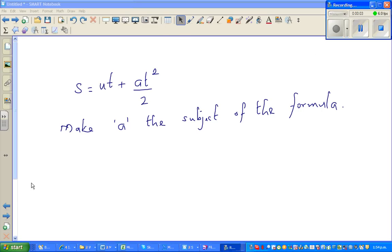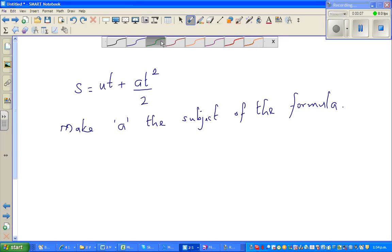Continuing from a previous video on making the subject of a formula, this is Newton's second equation of motion: s equals ut plus at squared over 2. We don't need to understand what these terms are, but the focus here is we want to make 'a' the subject of this formula. s is the distance, a is the acceleration, u is the initial velocity, and so on.